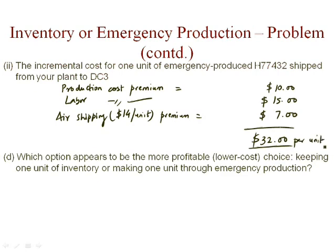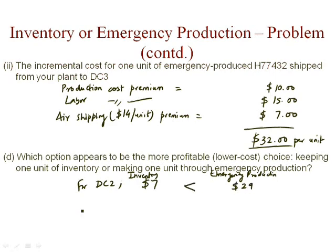So part D asks which option is the lower cost choice — keeping one unit of inventory or making one unit through emergency production. For DC2, inventory cost was $7 and emergency production was $29. For DC3, inventory cost was $11.67 and emergency production was $32 more. In both cases the inventory cost is less than emergency production cost, so in this problem we would prefer to keep a unit of inventory rather than rely on emergency production.